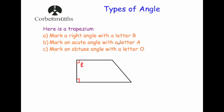It says mark an acute angle with the letter A. An acute angle is an angle that's less than 90. We've got two angles left — this angle here is the acute one, so I'm going to mark it with A because it's less than 90 degrees. And it says mark an obtuse angle with the letter O — an obtuse angle is bigger than 90, so there's the obtuse angle marked with O.